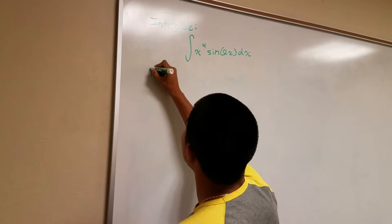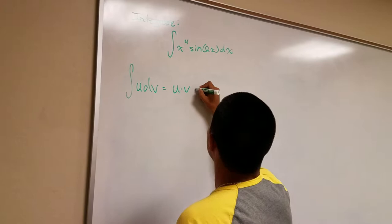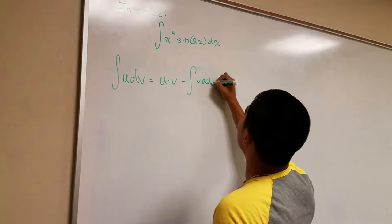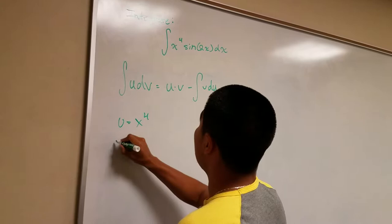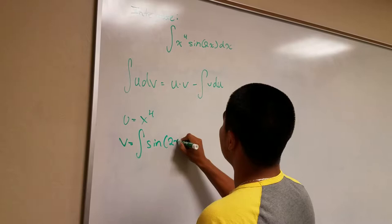The integration by parts formula is: the integral of u dv equals u times v minus the integral of v du. By this, we can select u equal to x to the fourth, and then select dv equal to the integral of sine of 2x dx.